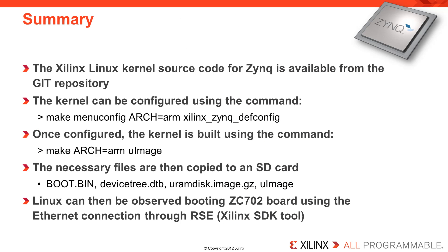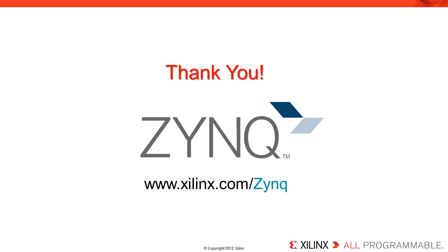Constructing a custom Linux kernel is not that difficult. First, download the Xilinx Linux kernel source code for Zynq from the git repository. Next, the kernel can be configured using the make menuconfig command. Once configured, the kernel is built using the make ARCH command. When this process completes, the necessary files are copied to an SD card, which is then used to boot the ZC702 board. The boot process can be monitored using the Ethernet connection. Thank you for watching and please check back at xilinx.com/training/zynq for additional videos on Zynq.